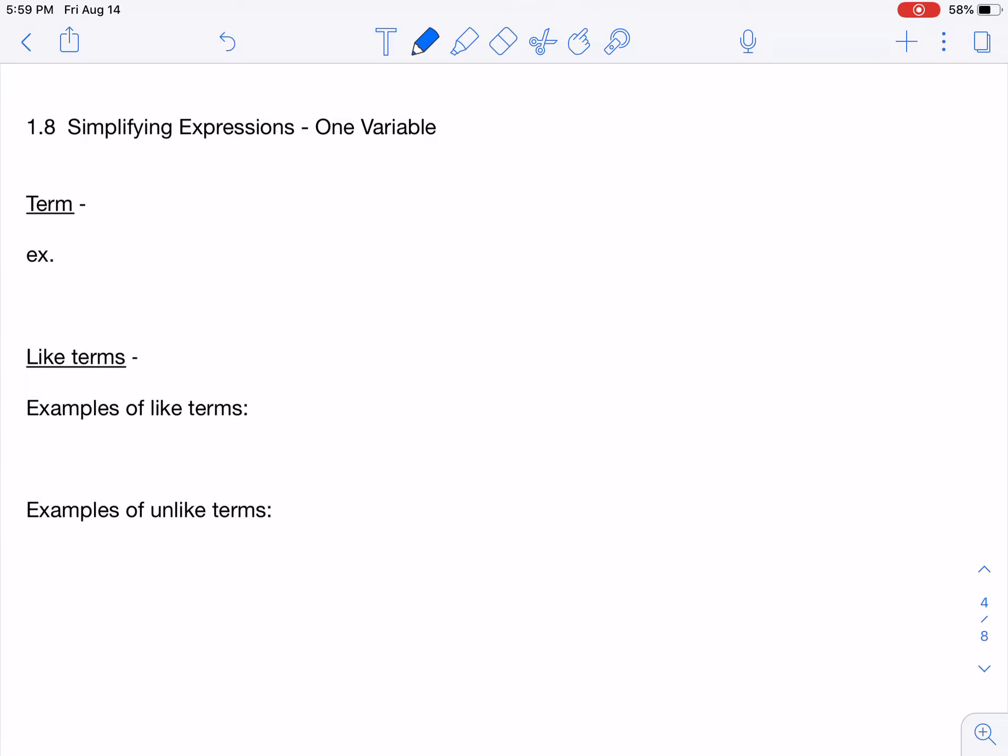So we need to have a couple of definitions. First of all, the definition of a term. A term is a part of an expression separated by an addition or subtraction sign. Notice we did not include multiplication or division here. There will be lots of multiplication going on within the terms themselves, but terms are separated either by an addition or subtraction sign.